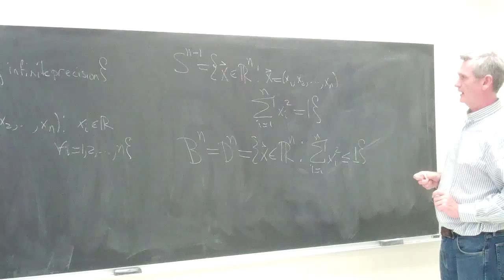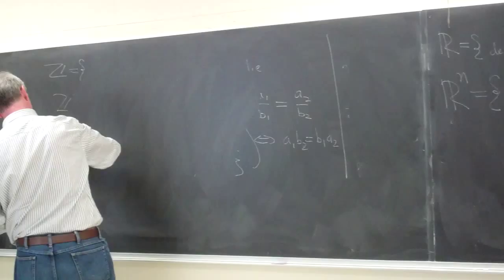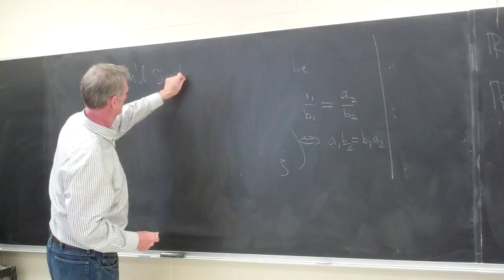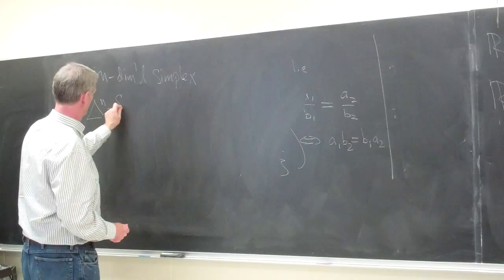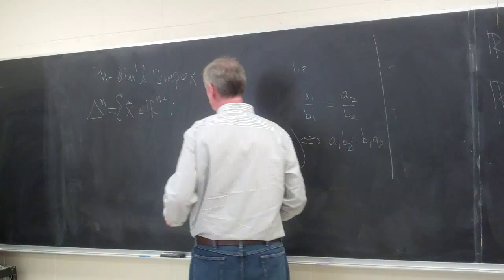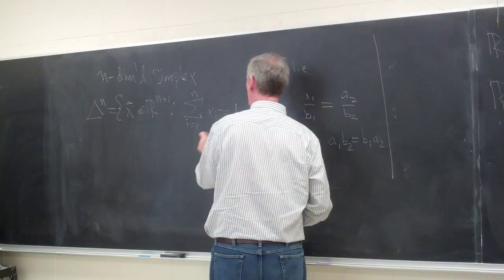And I'd like to define the n-dimensional simplex. So I'll call that delta n. The n-dimensional simplex will consist of vectors in Rn plus 1 such that the sum of the coordinates is equal to 1 and all of the coordinates are non-negative.